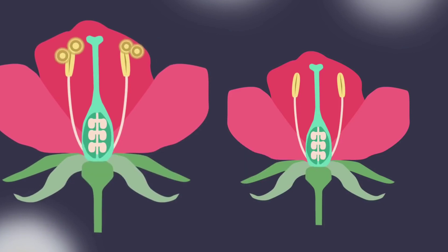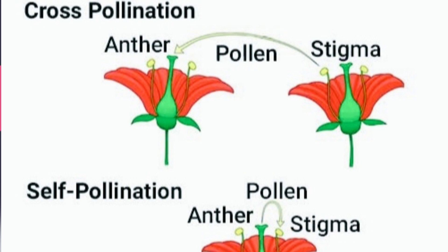Now let's talk about pollination. Pollination is the transfer of pollen grains from the anther to the stigma. There are two types of pollination: cross pollination and self pollination.